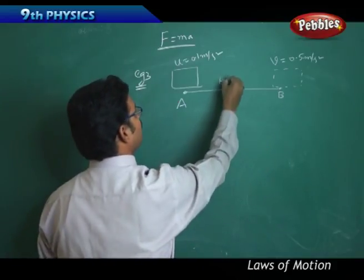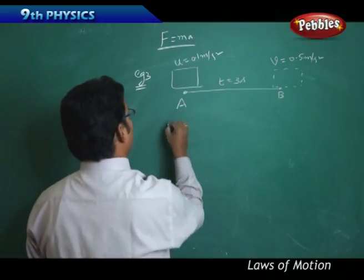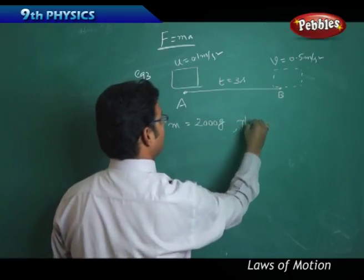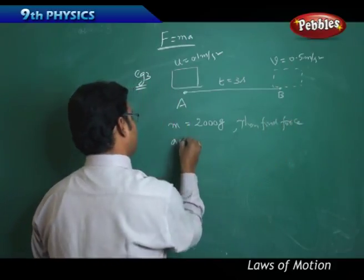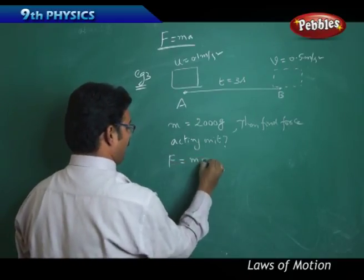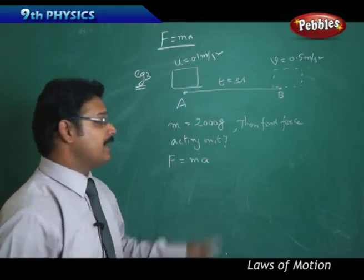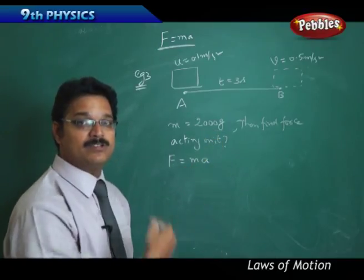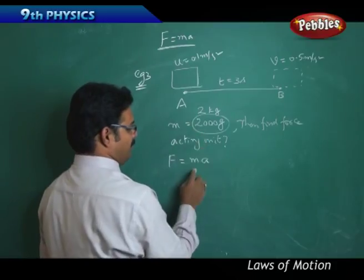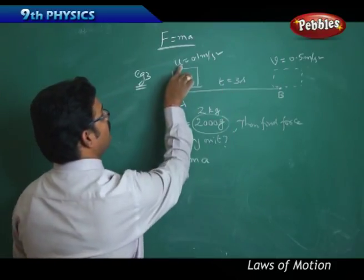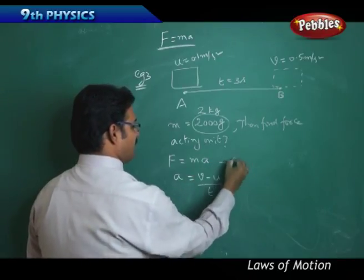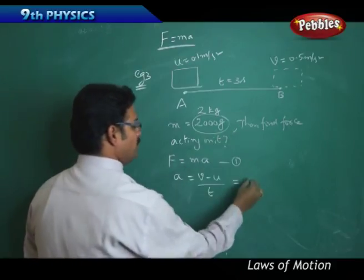If mass of the block equals 2000 grams, then find force acting on it. We know the formula F = ma. The mass is 2000 grams - remember this is not an SI value. 2000 grams should be converted into SI unit kg, so 2000 grams is 2 kg. We got mass. What about acceleration? Acceleration is not given, but you have U, V, T. Recall the acceleration formula: a = (V - U)/t. So a = (0.5 - 0.1)/3.